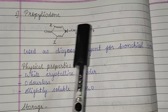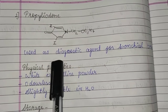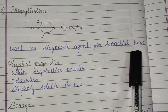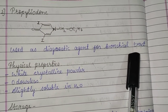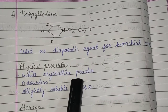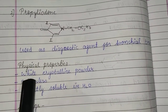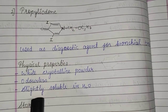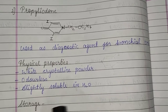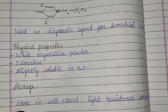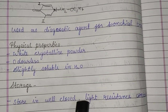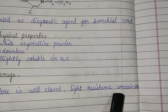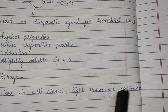The second example is propyl iodone. It is used for bronchial tract imaging. Physical properties: white crystalline powder, odorless and slightly soluble in water. Storage: stored in a well-closed and light-resistant container.